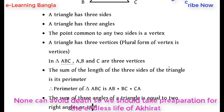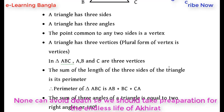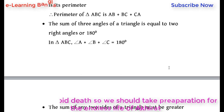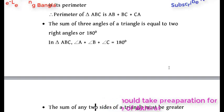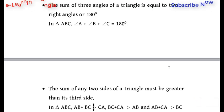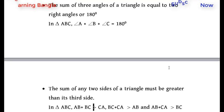The sum of the three angles of a triangle is equal to 180 degrees, which is the same as two right angles.